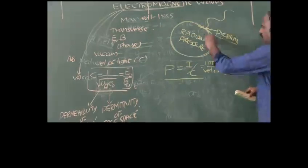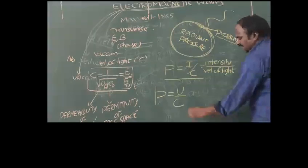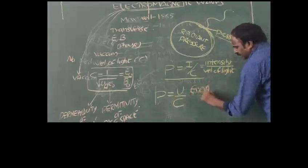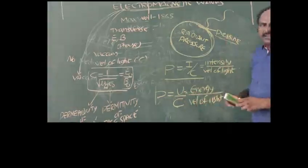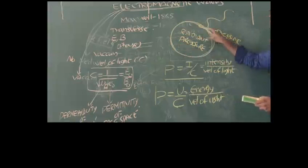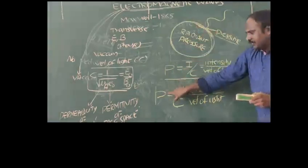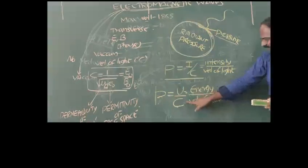Due to this pressure, we also calculate momentum, which is given by p = U/c, where c indicates velocity of light and U indicates energy. So when any electromagnetic wave is sent onto a surface, it produces radiation pressure (formula I/c) and also produces momentum on that surface, given by p = U/c, where U is energy and c is velocity of light.